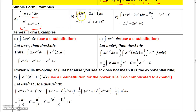Here's another one. If you integrate 5e to the x, you just get 5e to the x. If you integrate minus 2x, you get minus x squared. And if you integrate 1, you get x. So the answer is 5e to the x minus x squared plus x plus a constant.